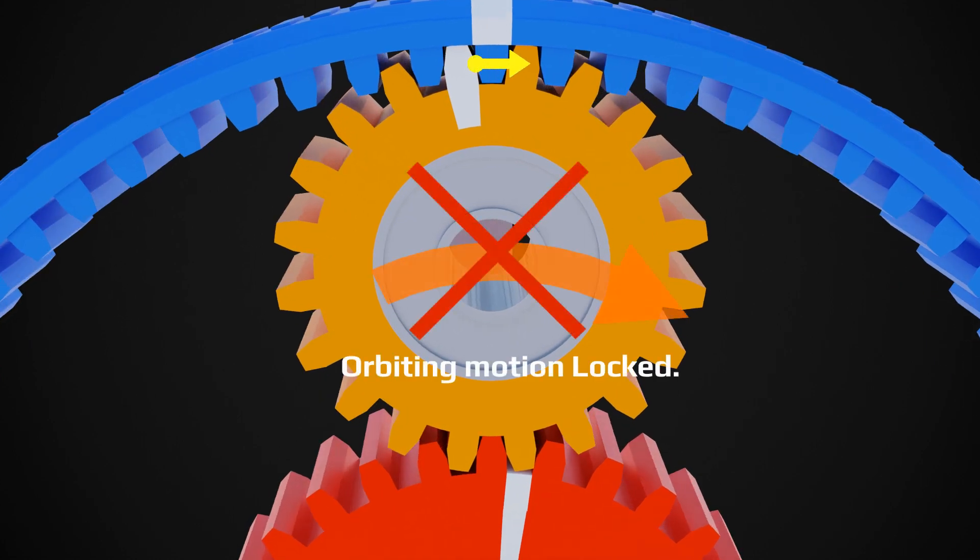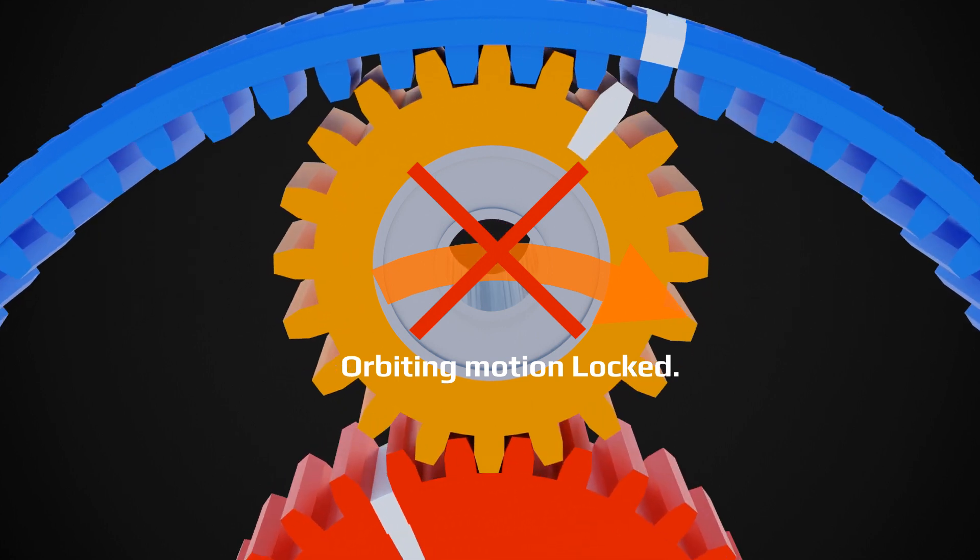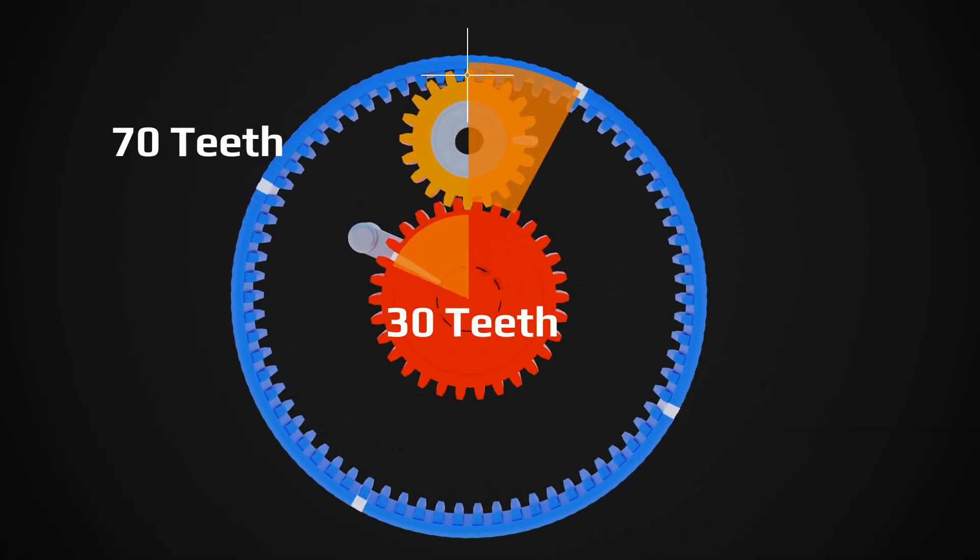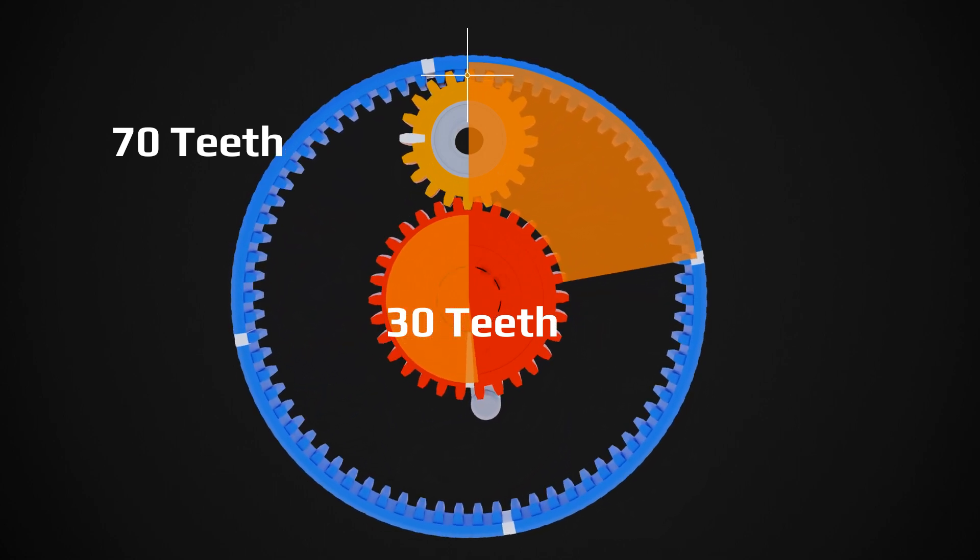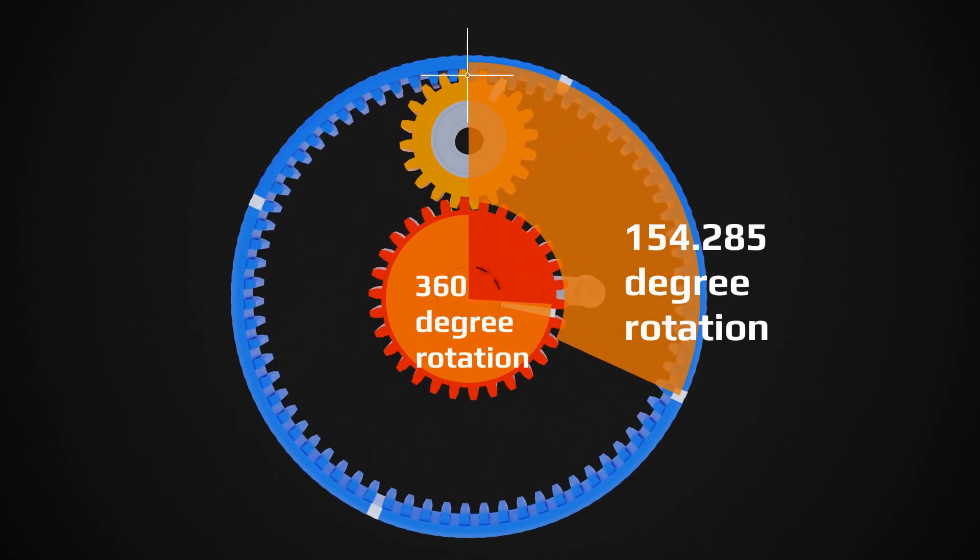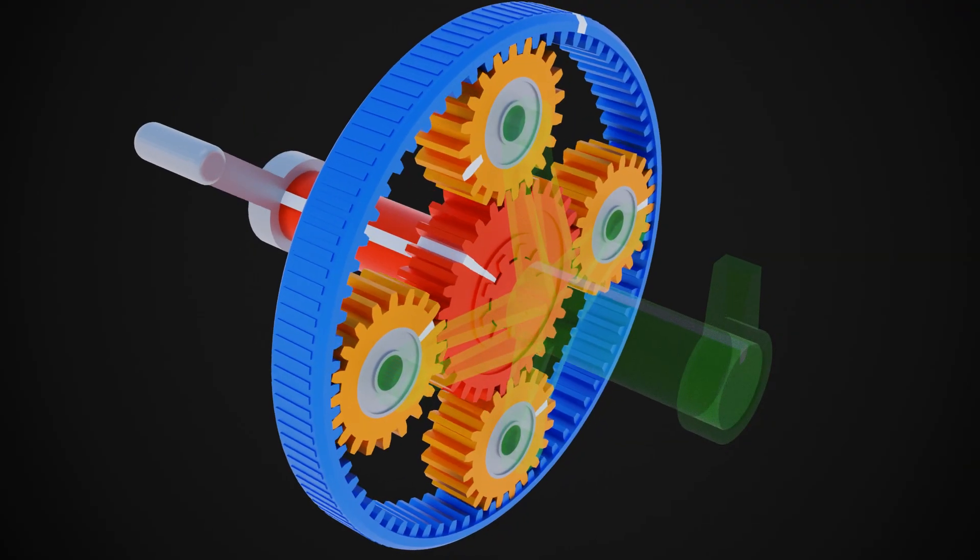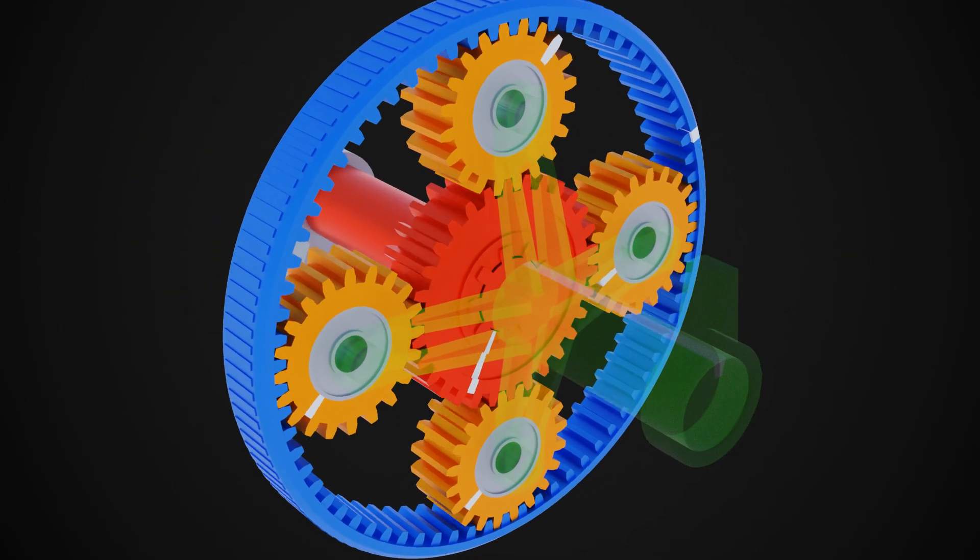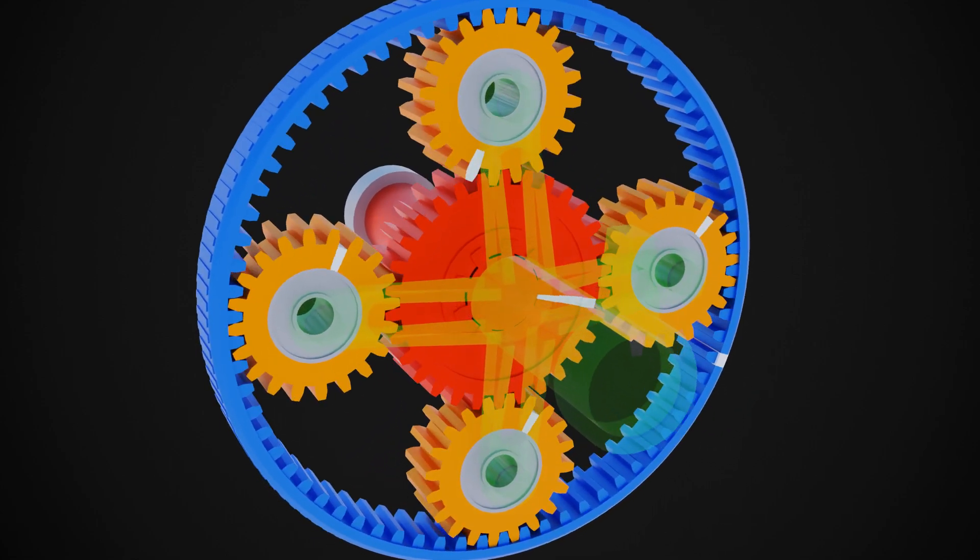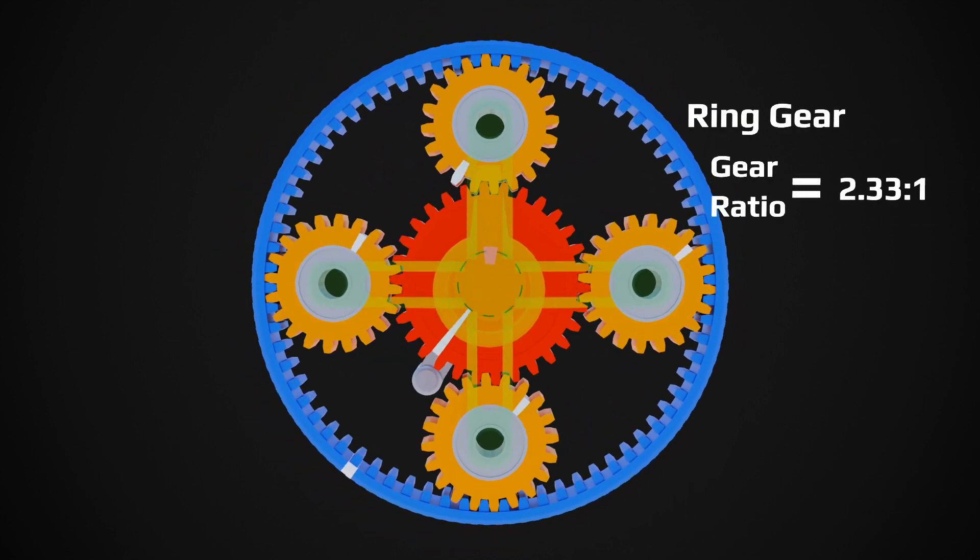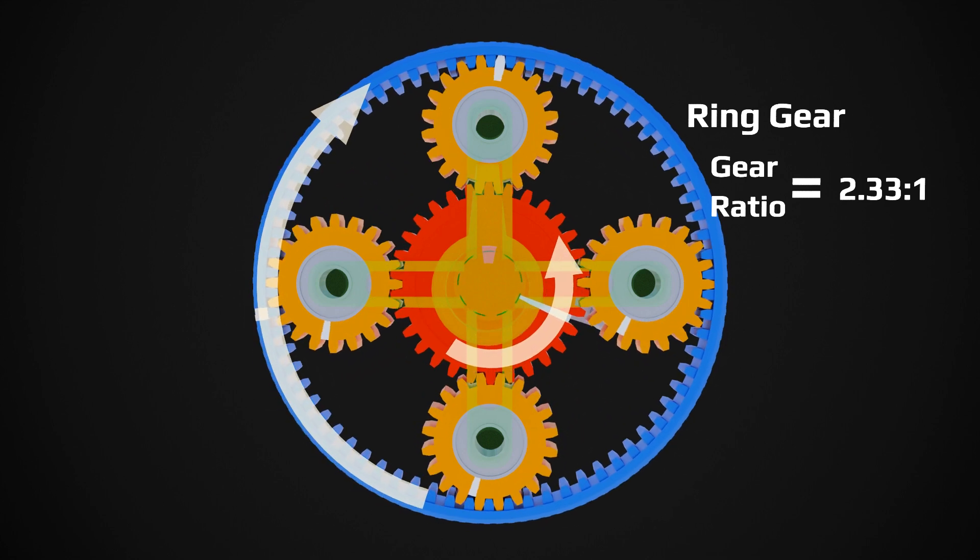Ring gear has 70 teeth. For one complete rotation of sun gear, 30 teeth of ring gear will rotate forward from this mating point. So ring gear will rotate only 154.285 degrees. Or we can say for one complete rotation of ring gear, sun gear has to rotate 840 degrees or 2.33 times rotation. So the gear ratio between ring and sun is 2.33 to 1. Here ring gear rotates in opposite direction of sun gear rotation.